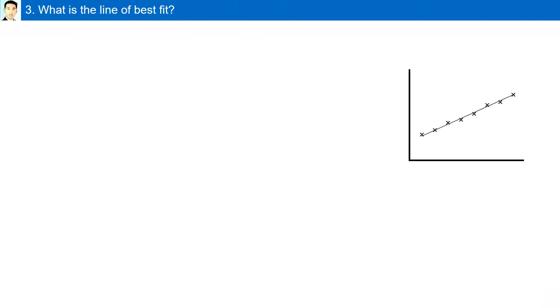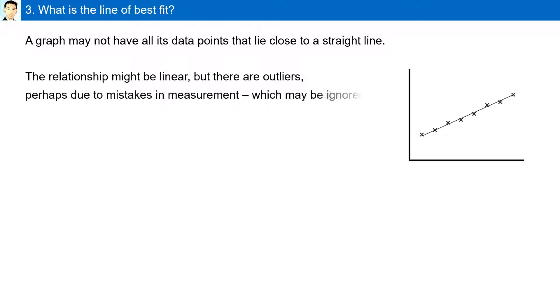What is a line of best fit? A graph may not have all its data points lie close to a straight line. The relationship may be linear but there are outliers, perhaps due to measurement mistakes, which may be ignored, and a straight line of best fit is drawn.